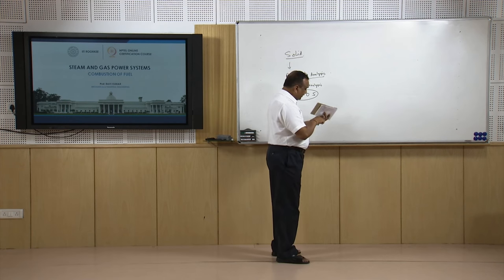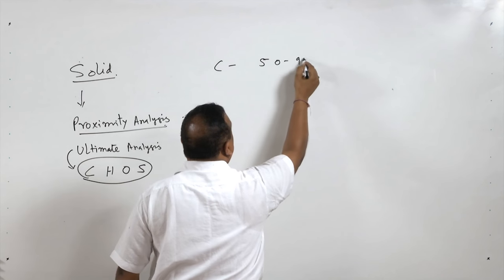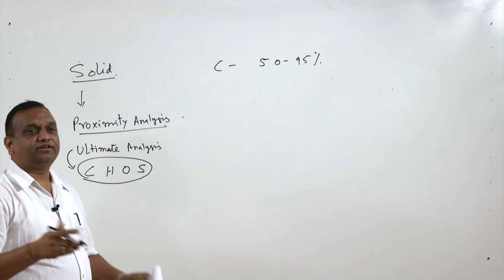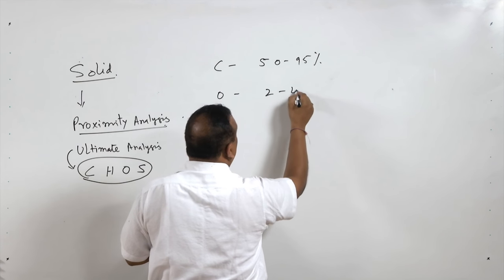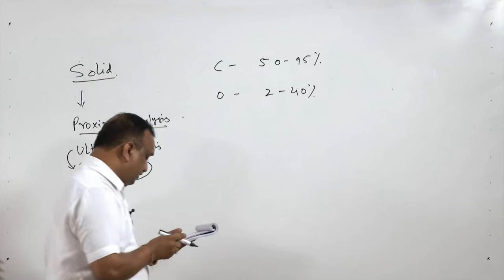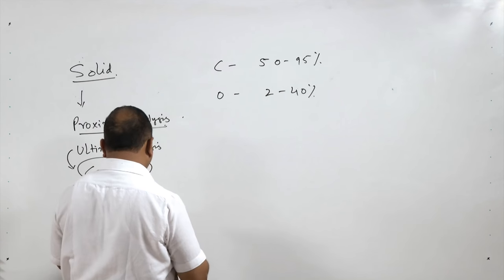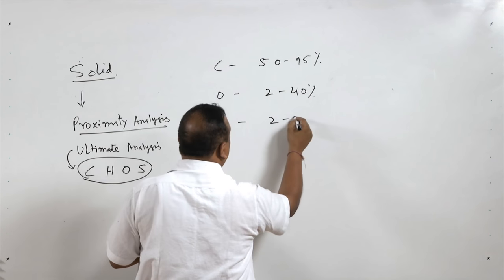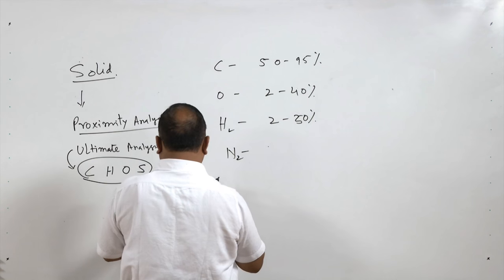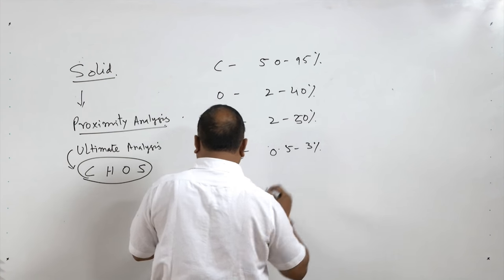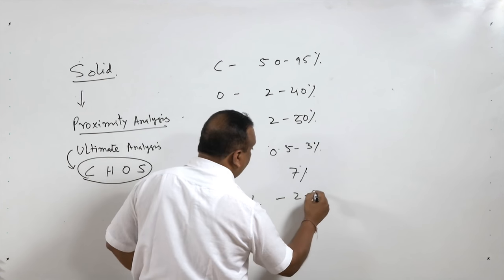Some typical figures: carbon can vary from 50 to 95 percent in coal — anthracite can go up to 95 percent. Oxygen can vary from 2 to 40 percent; peat coal can go up to 40 percent. Hydrogen can be 2 to 5 percent. Nitrogen is 0.5 to 3 percent. Sulfur can be up to 7 percent, and ash can range from 2 to 30 percent.